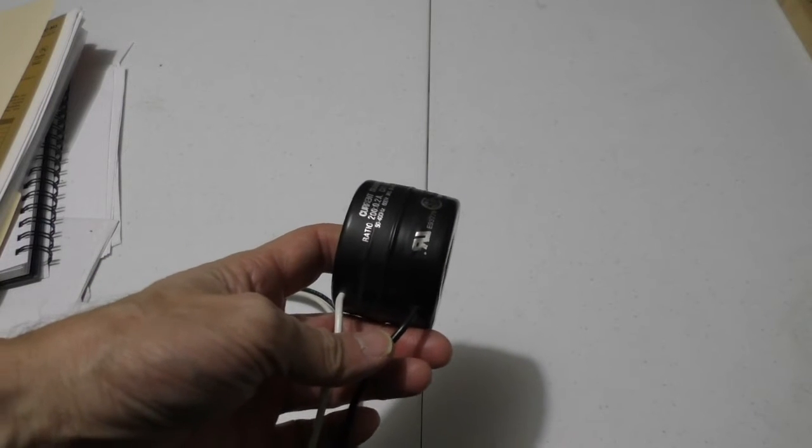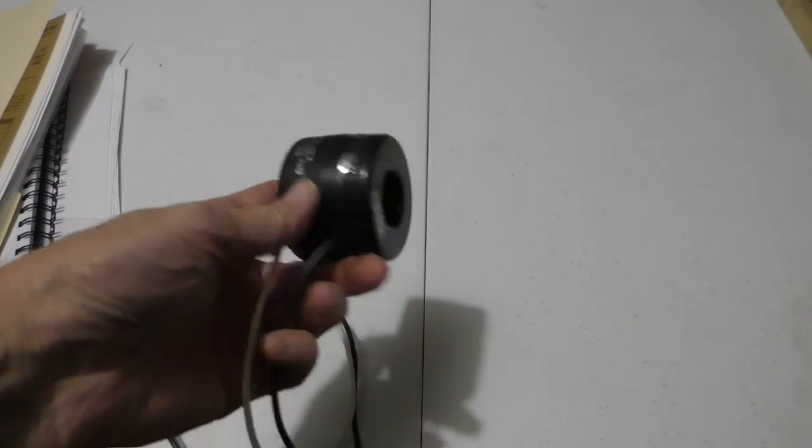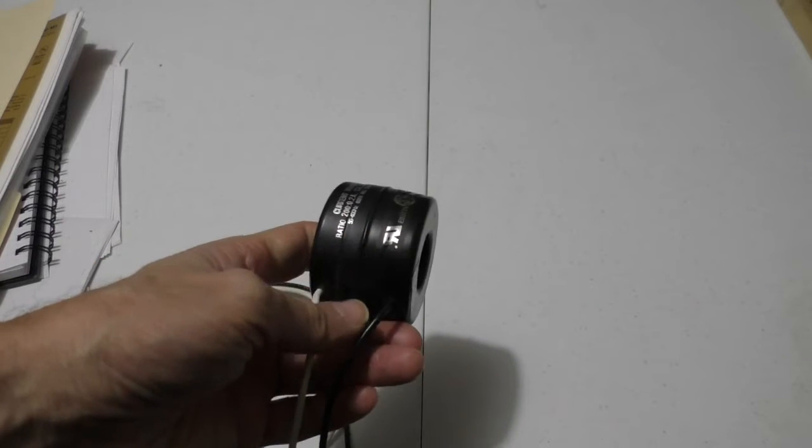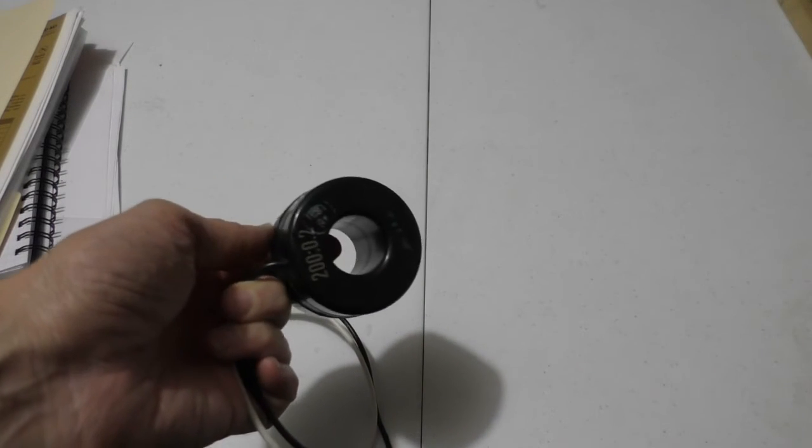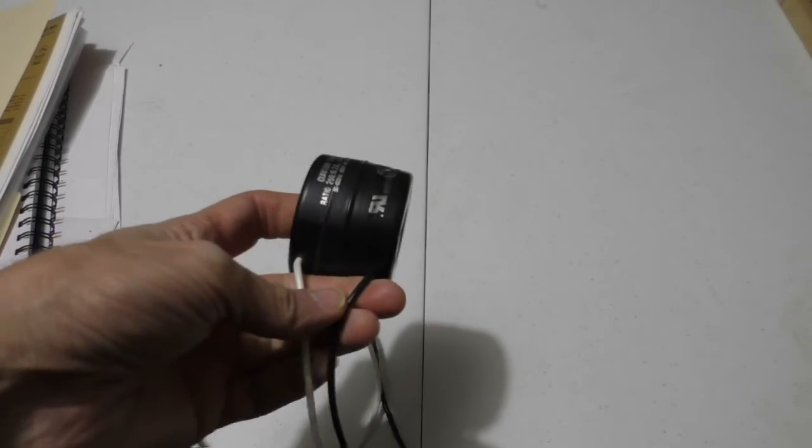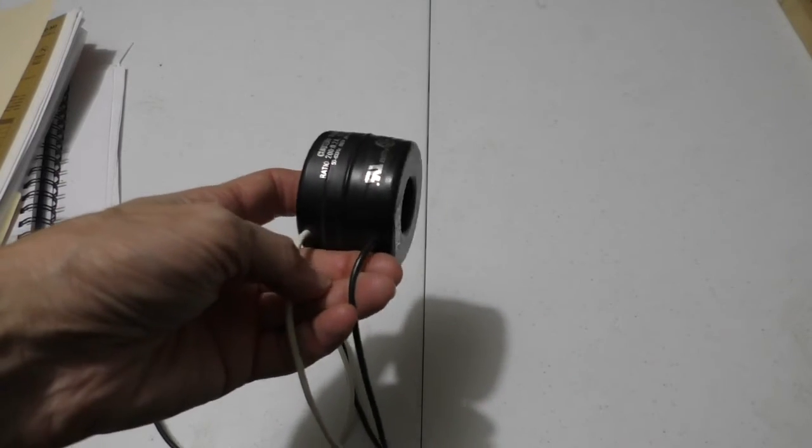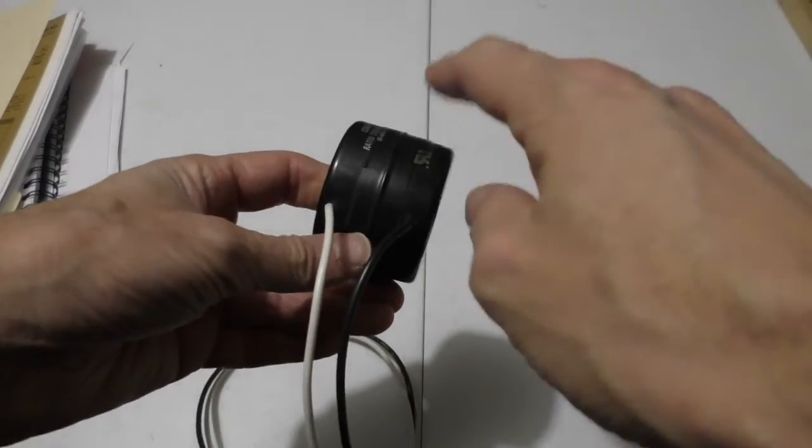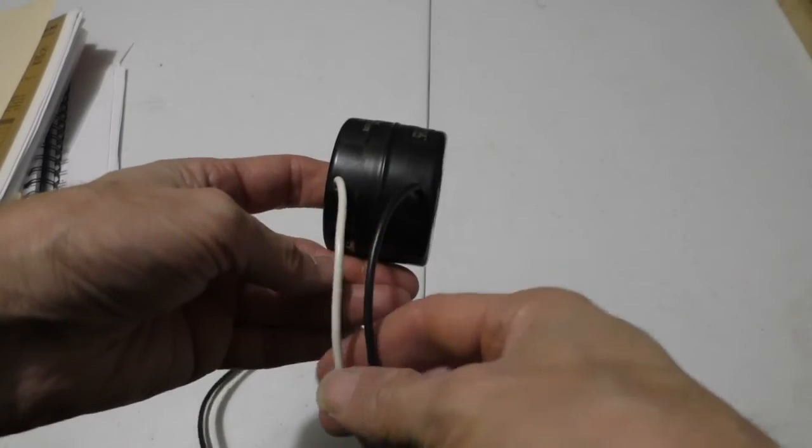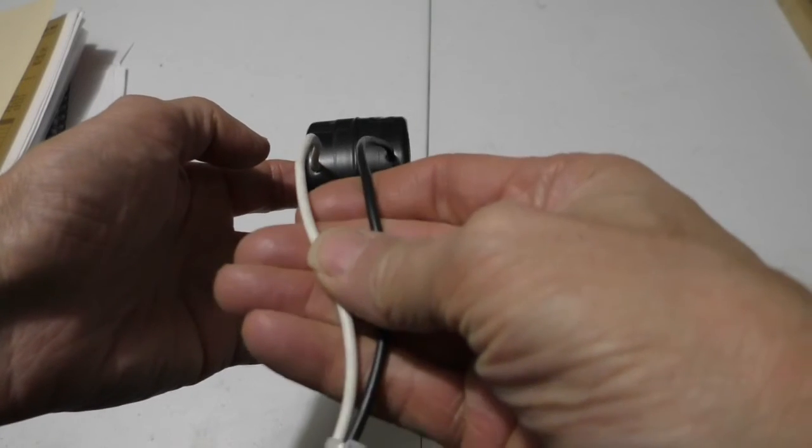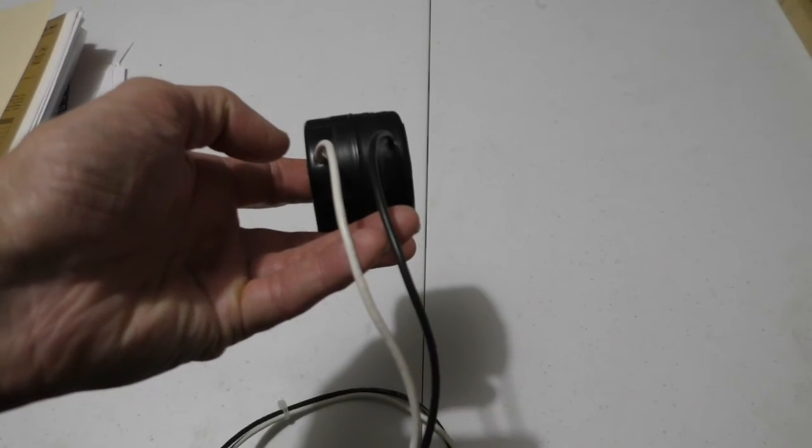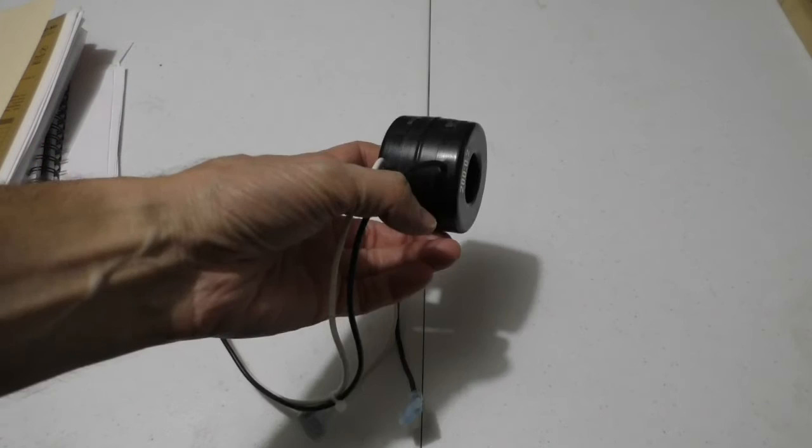Now just to be certain that we're on the same page here, I just want to make sure that you understand this is an AC current transformer. This won't work with DC. You can't hook it up to your car battery and measure how much current your starter is drawing.